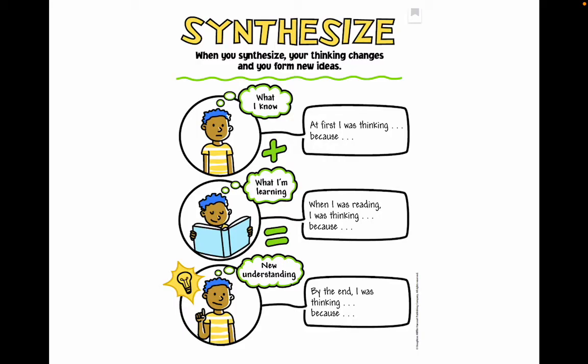Maybe you have a little bit of background information or background experience in whatever that topic is. Maybe you don't and you're just going off of some images that you've seen. As you start reading the text, you may start to change your thinking about what you're reading. When I was reading, I was thinking blank because of this reason. So as you read, you're thinking about what you're learning.